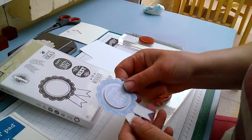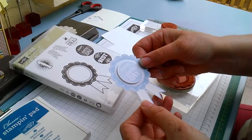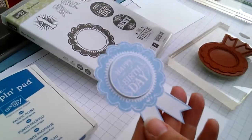Today I'm going to be showing you how to stamp and cut out one of these lovely rosettes from the Stampin' Up Blue Ribbon range.